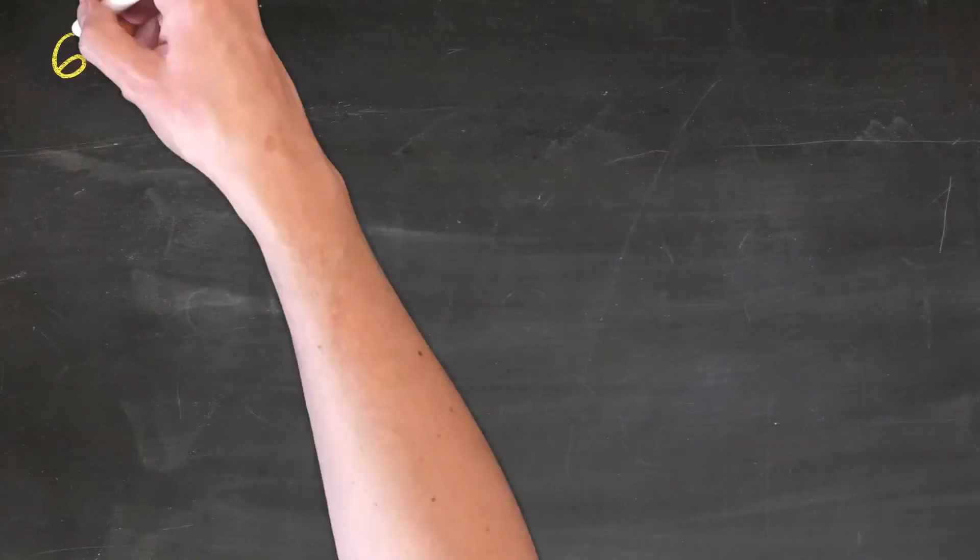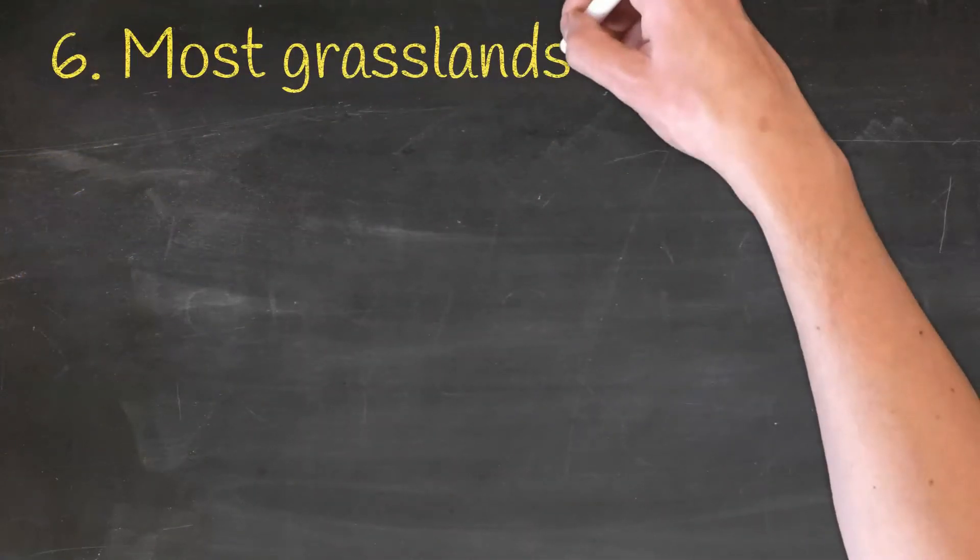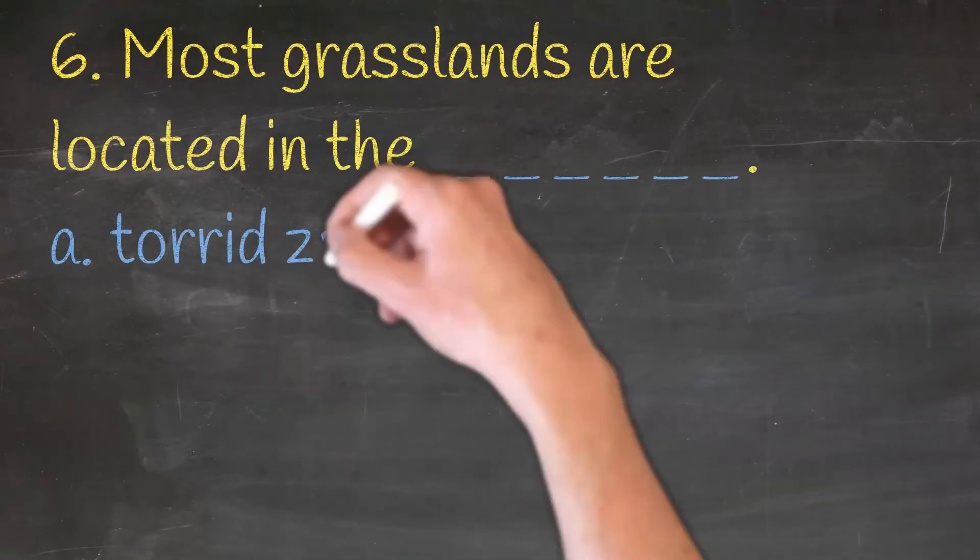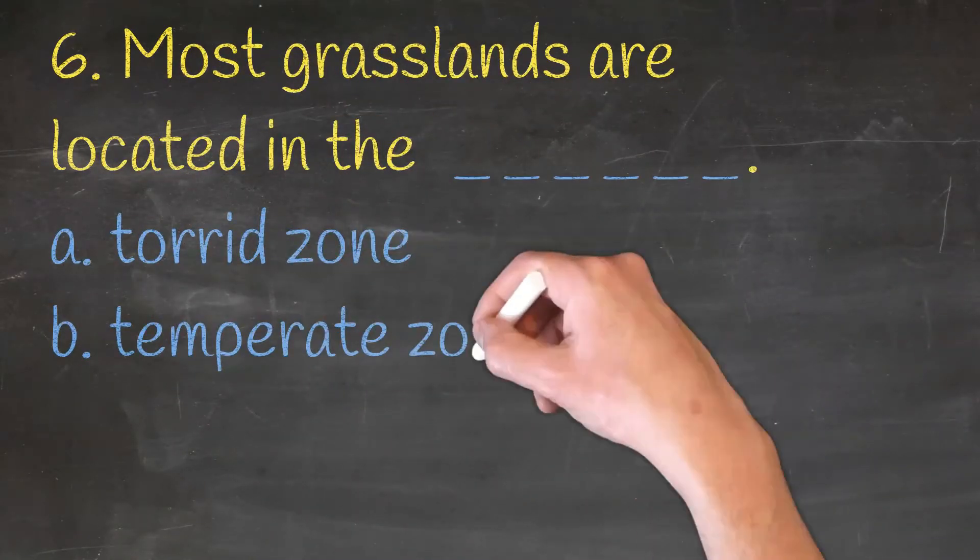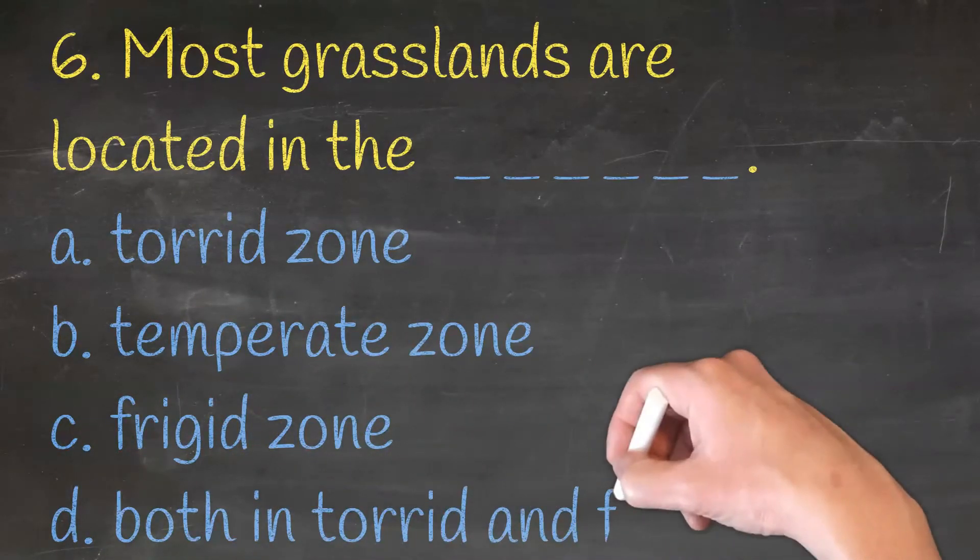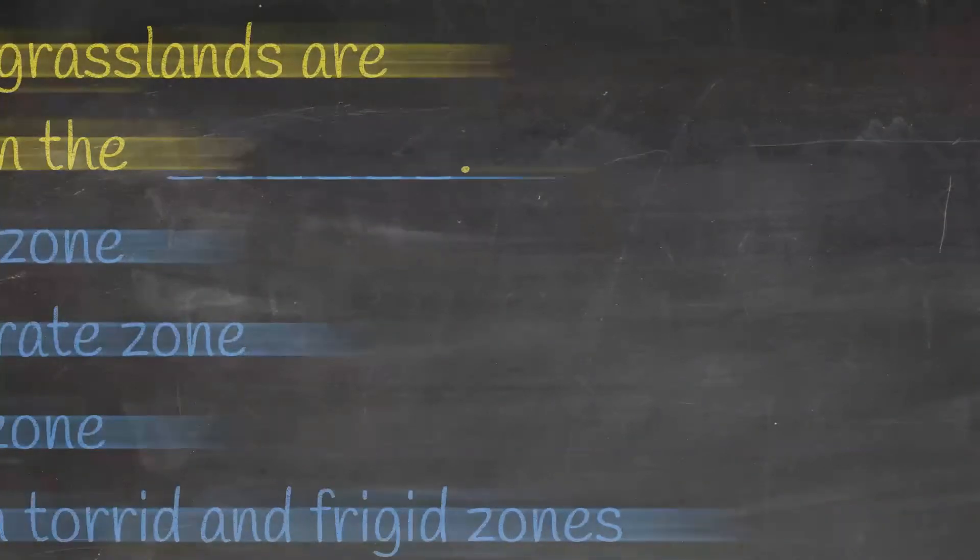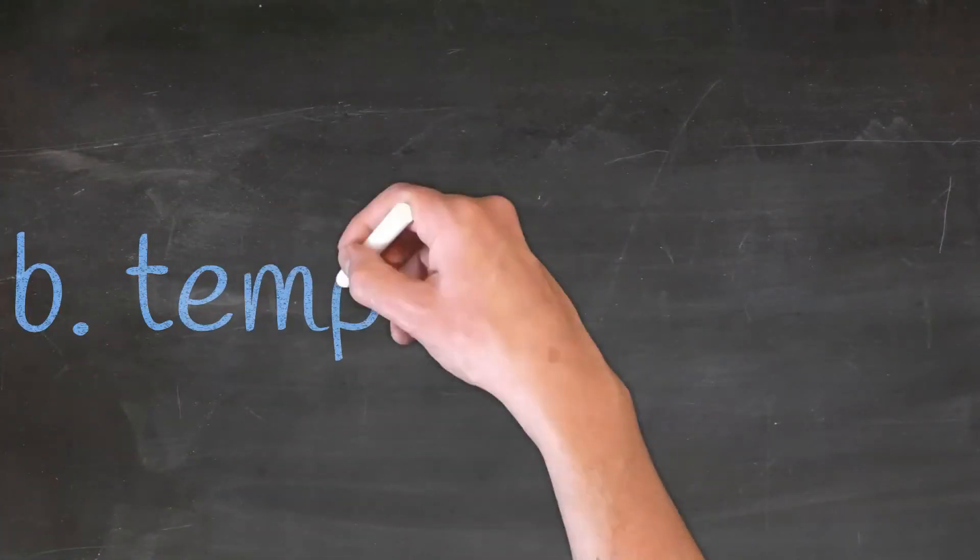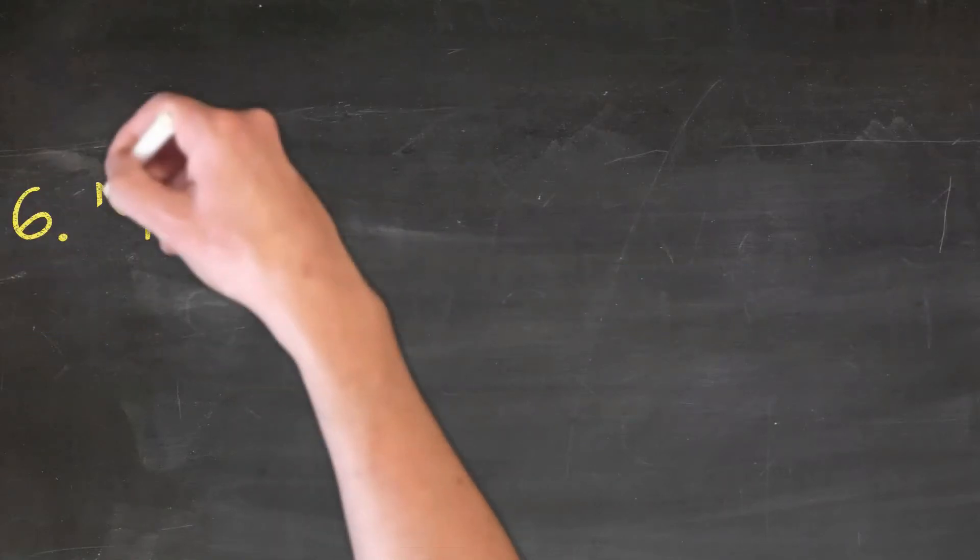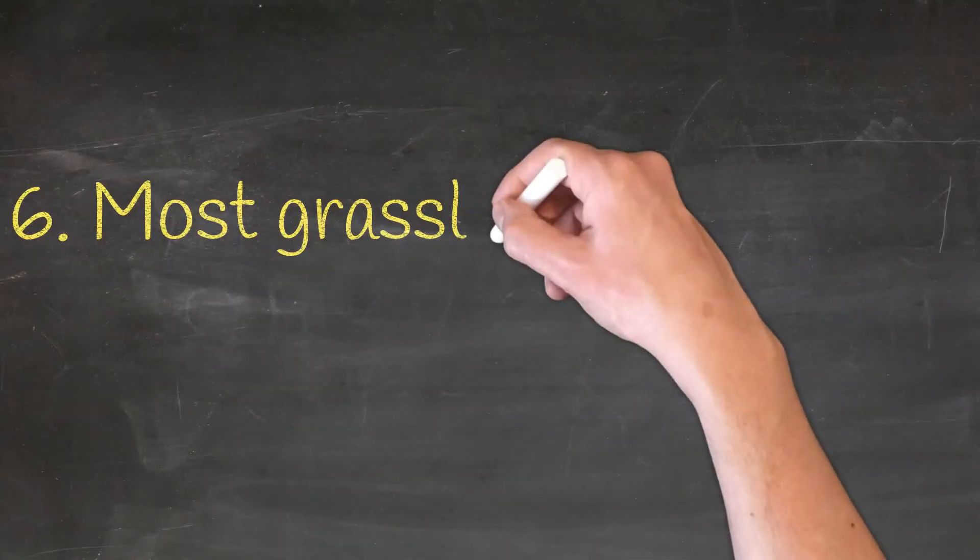Most grasslands are located in the dash. Torrid zone, temperate zone, and the correct answer is b, temperate zone. Most grasslands are located in the temperate zone.